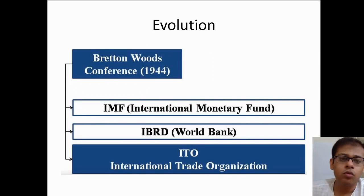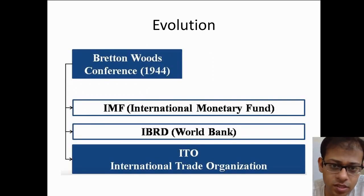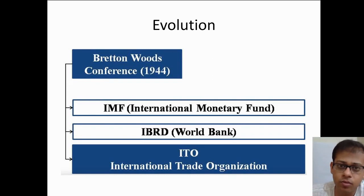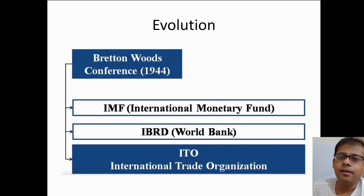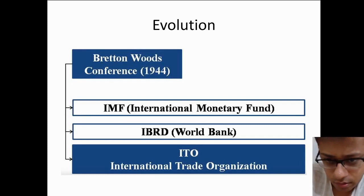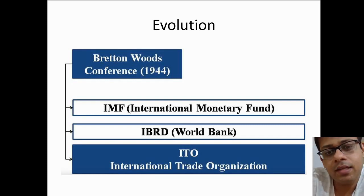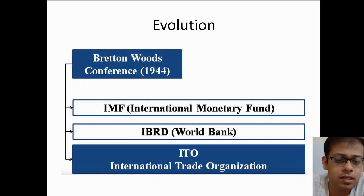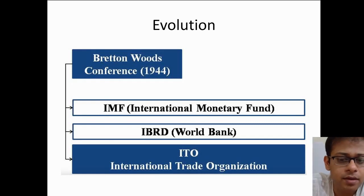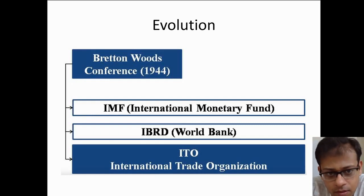The Bretton Woods Conference was held in New Hampshire, United States of America, and three things were aimed. The first two — IMF and IBRD — came into existence. But the third, which was aimed at — ITO, the International Trade Organization — never came into existence.